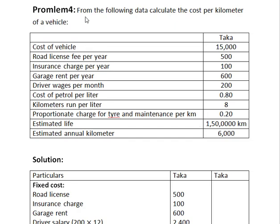We will start the lesson. Problem 4: From the following data, calculate the cost per kilometer of a vehicle. The given data is: road license per year is 500, insurance charge per year is 100, garage rent per year is 600, driver wages per month is 200, cost of petrol per liter is 0.80, kilometers run per liter is 8, proportionate charge per tire and maintenance per km is 0.20, and annual kilometers is 6,000.